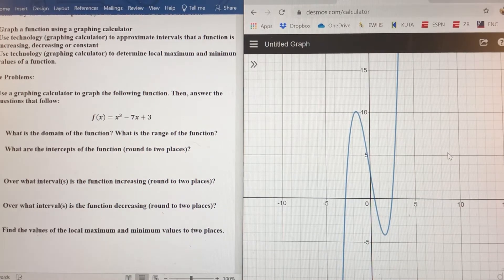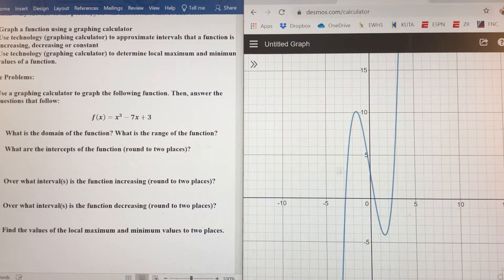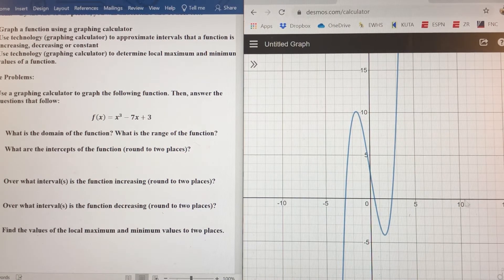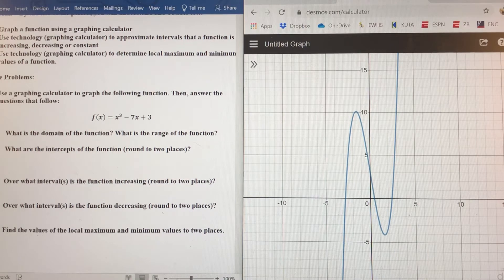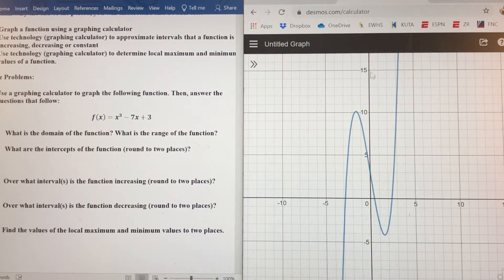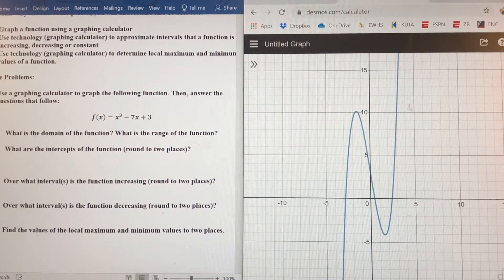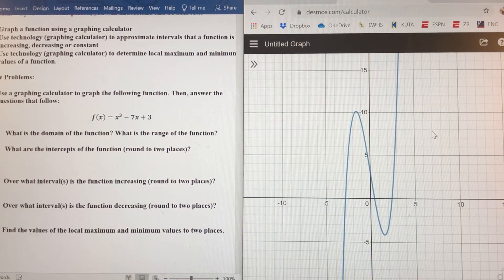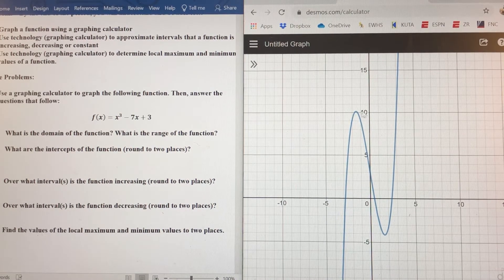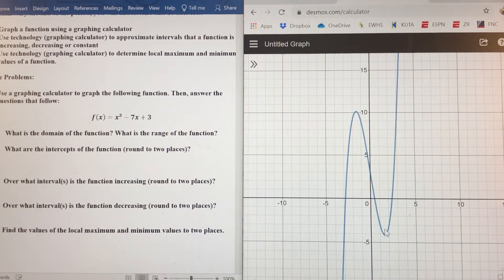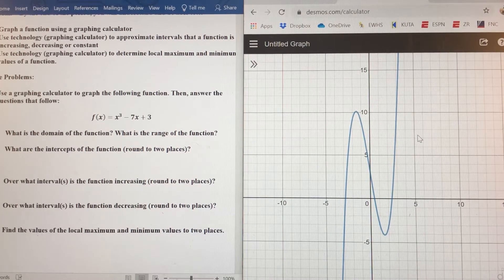We're basically on a window from like, you know, negative 15 to 15. And then it looks like about negative 10 for y up to about what 17 looks like. So a good enough graphing window. The main thing you want to see is you want to make sure you see the maximum and minimum values here.